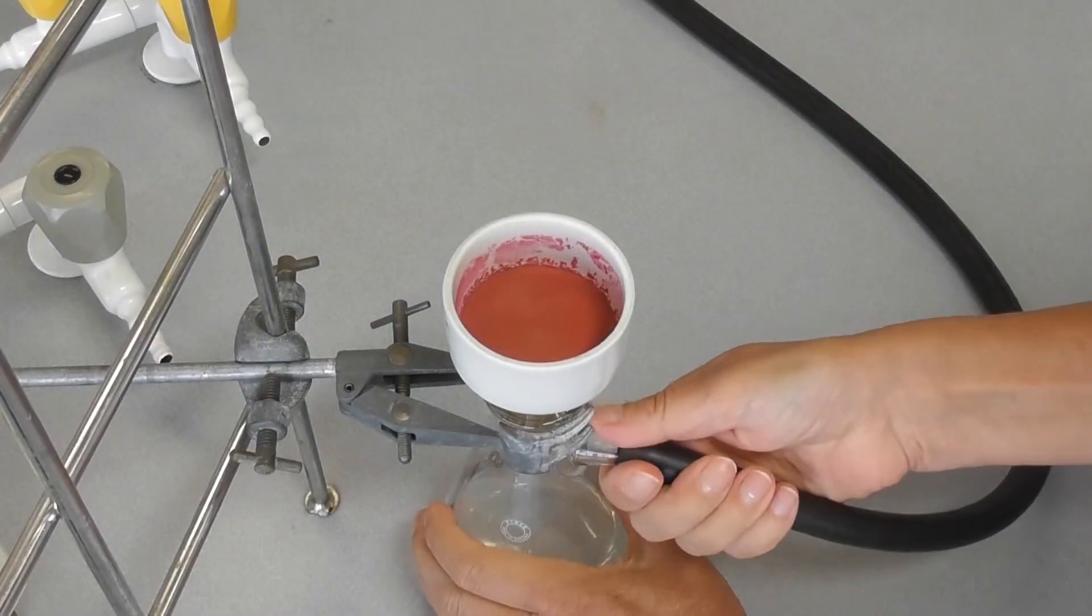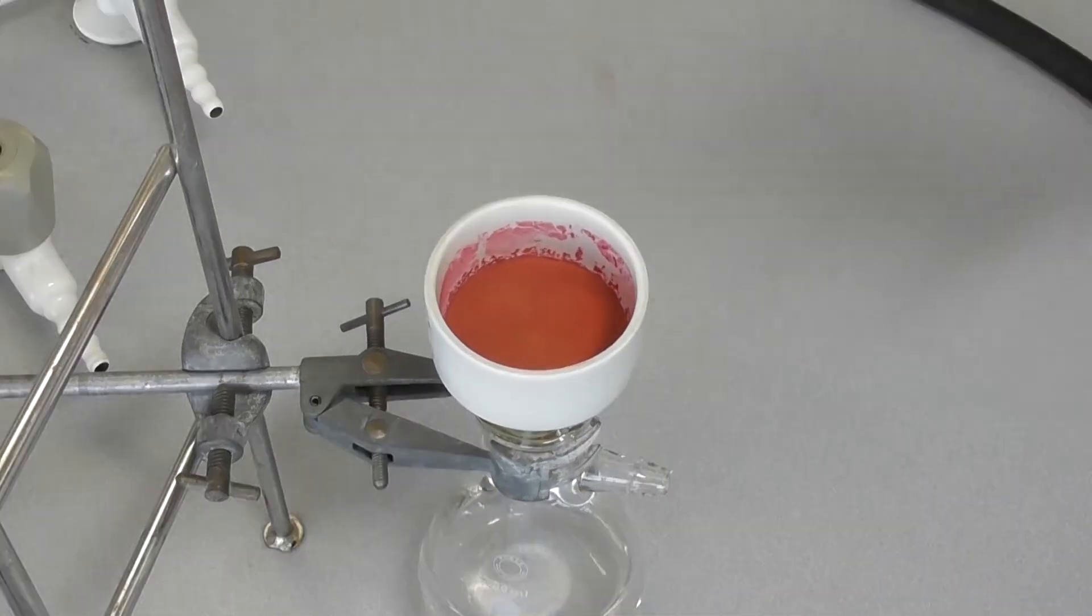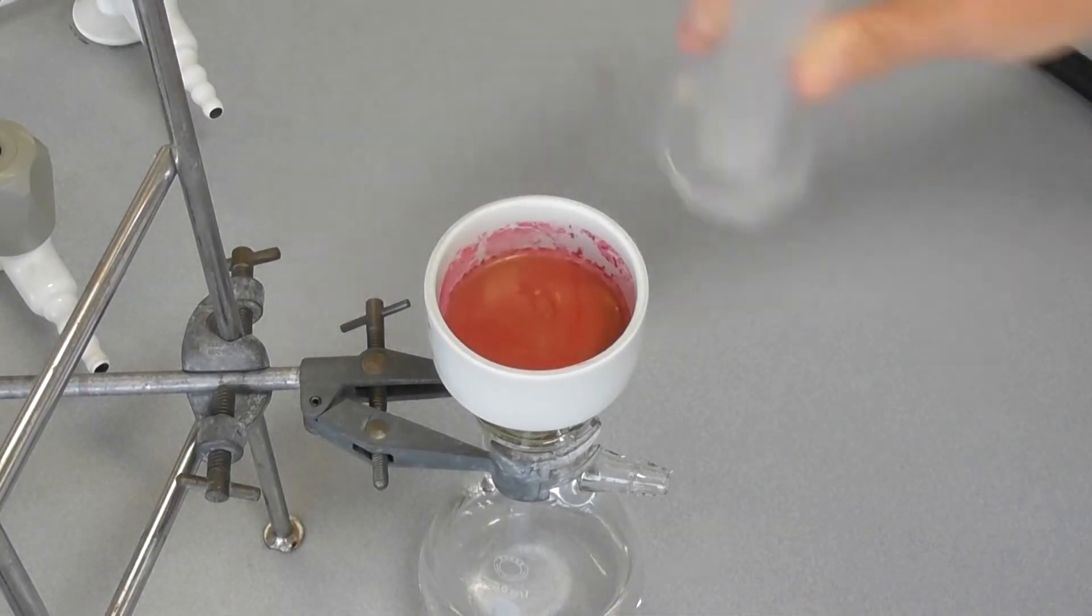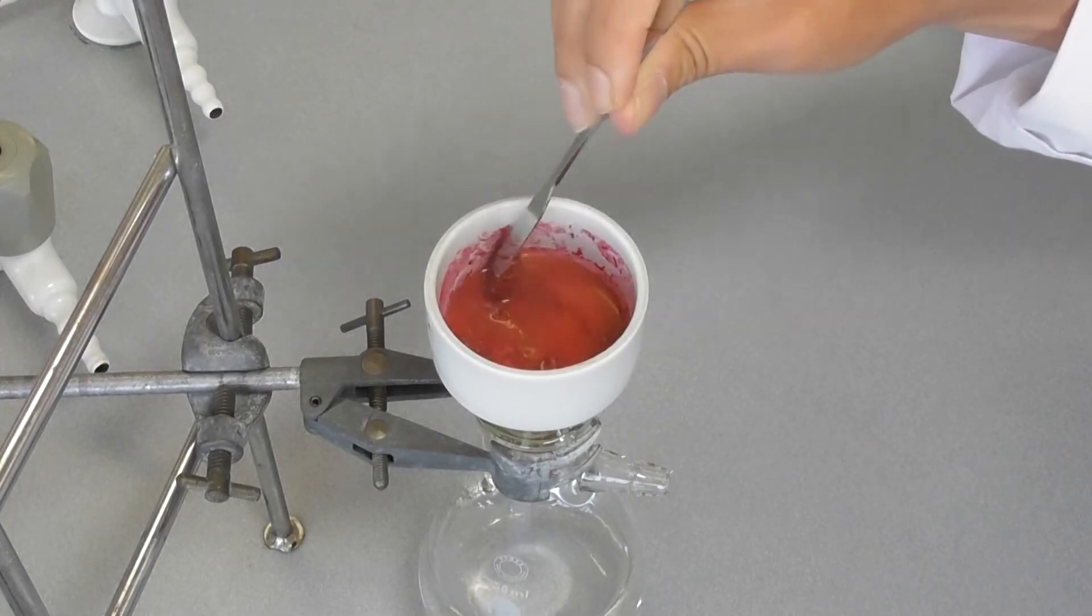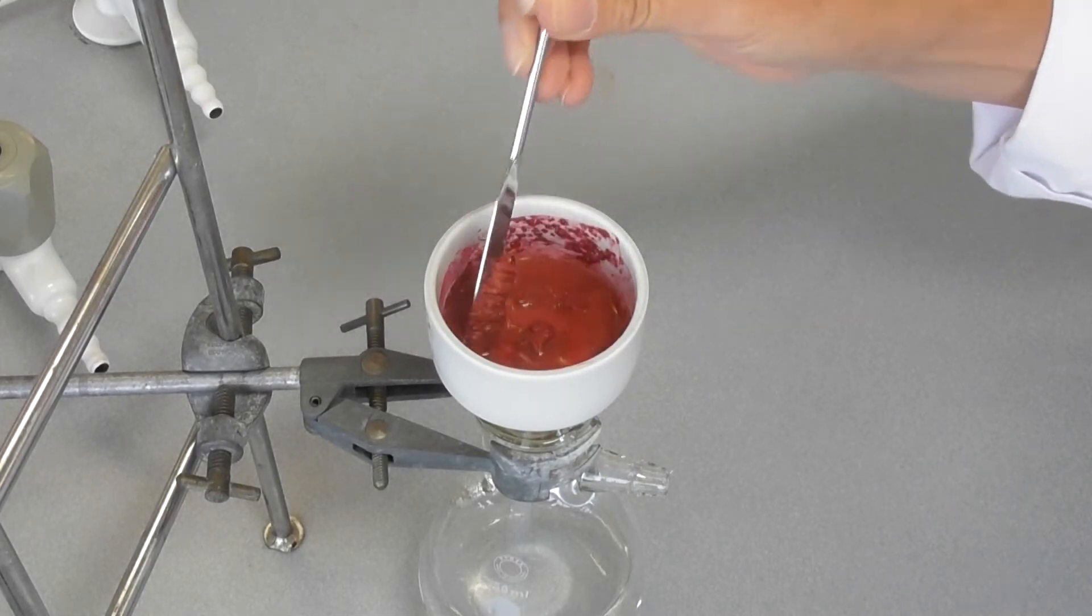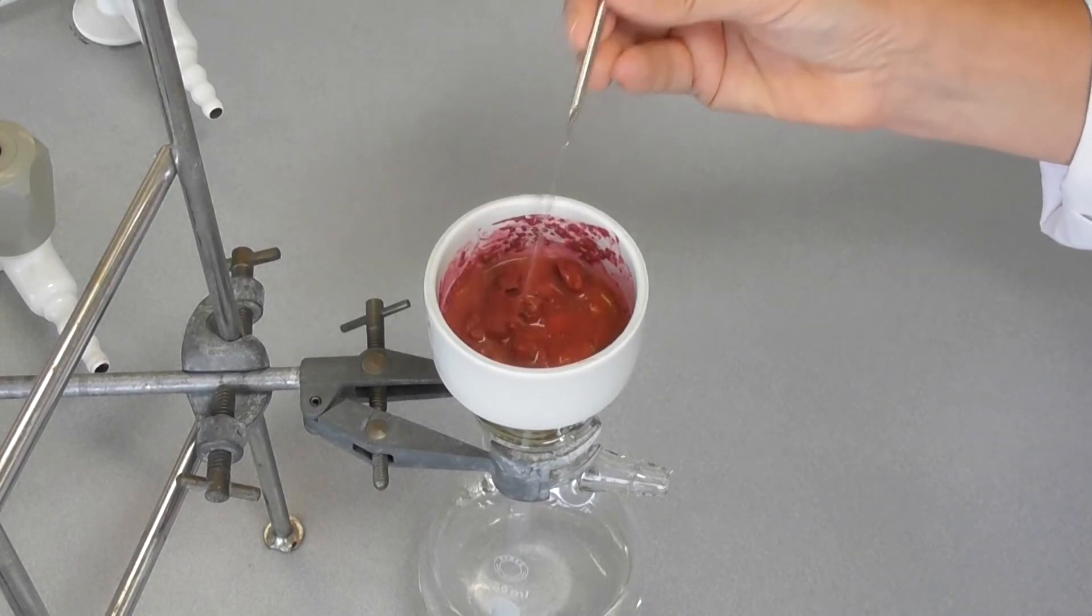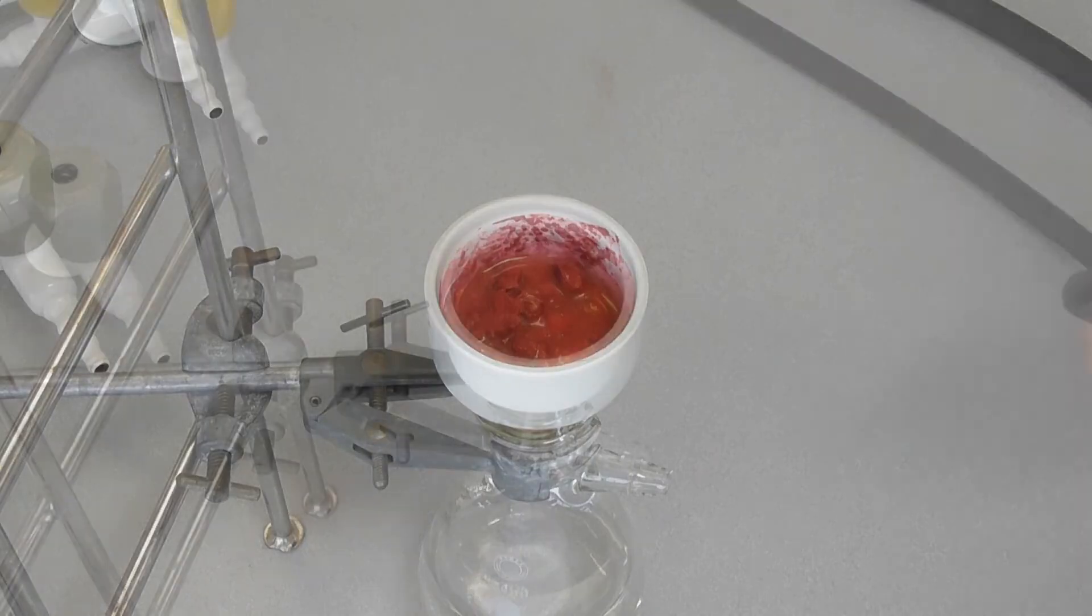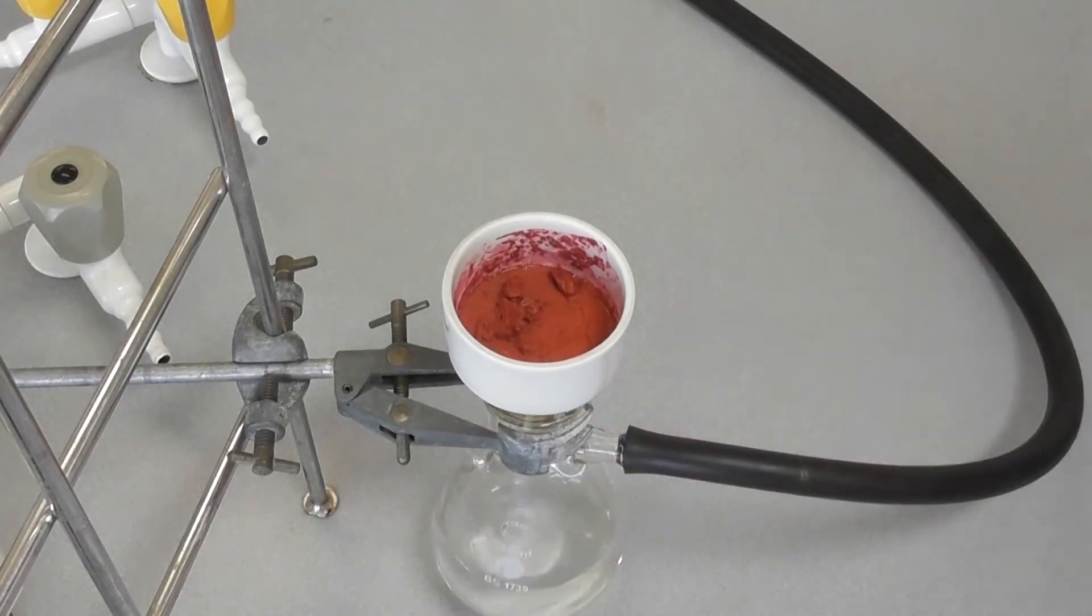Remove the vacuum hose. Add your washing liquid to the funnel and mix the product with the liquid. Reapply the vacuum to the Büchner flask and smooth out the solid in the funnel.